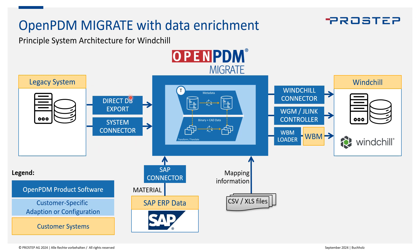From OpenPDM Migrate, we have building blocks which directly export from the database — for example from 3DX or SmartTeam, we already have those as project-ready building blocks. Once data is pulled, it resides in the OpenPDM Migrate staging database called Stage Source. We then have a second one called Stage Target on the right, where we perform the mapping. Before doing the actual mapping, we can also enrich the data.